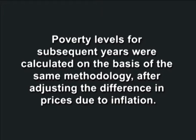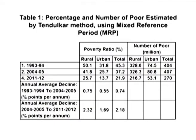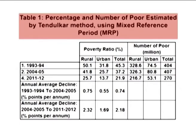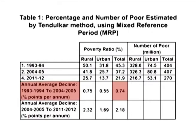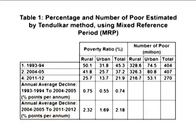After adjusting the difference in prices due to inflation, Table 1 on the screen shows national poverty levels for the last 20 years using the methodology suggested by the Tendulkar Committee. According to these estimates, poverty declined at an average rate of 0.74 percentage points per year between 1993-94 and 2004-05, and it declined at 2.18 percentage points per year between 2004-05 and 2011-12.